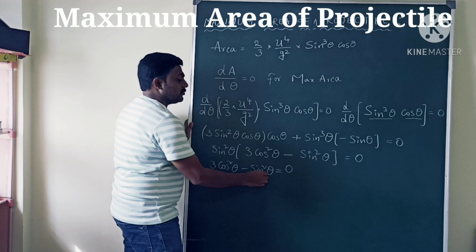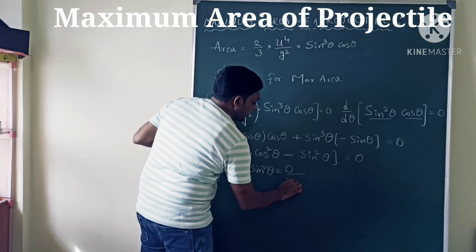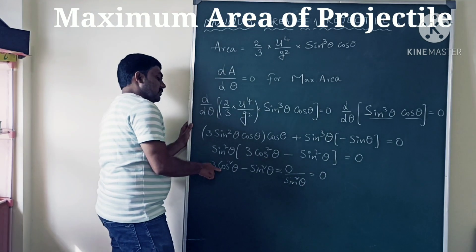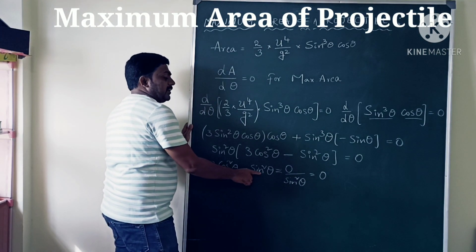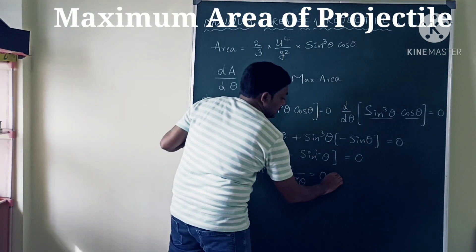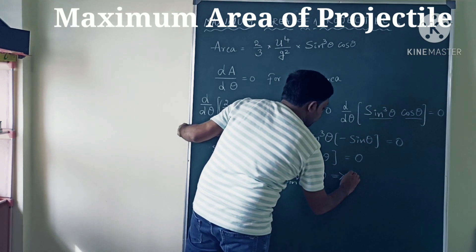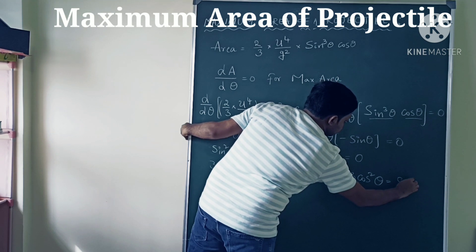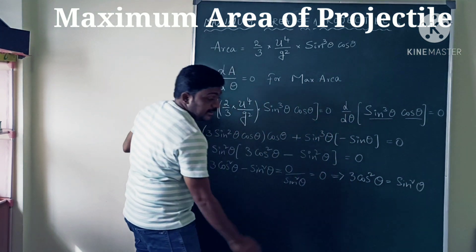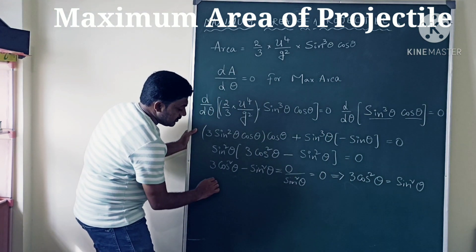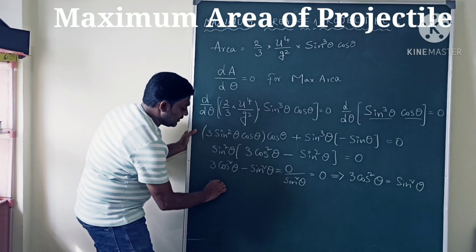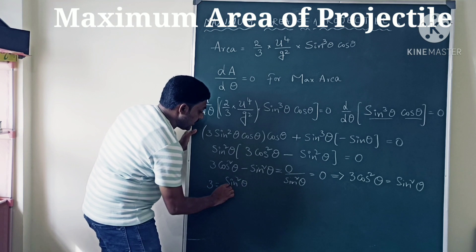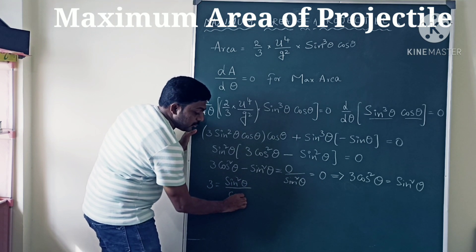Rearranging, 3cos²θ = sin²θ. Dividing both sides by cos²θ gives: 3 = sin²θ / cos²θ.